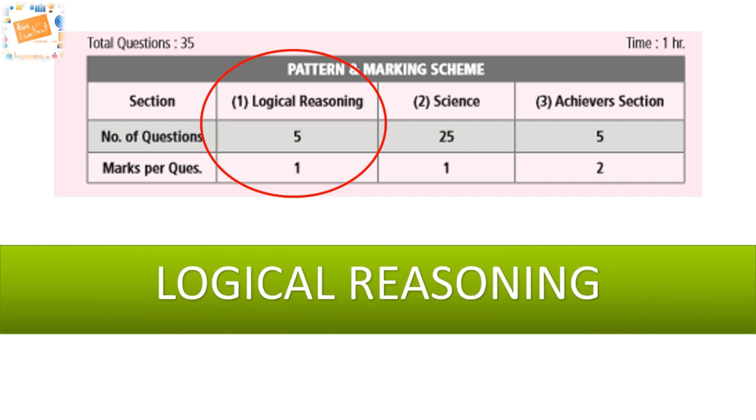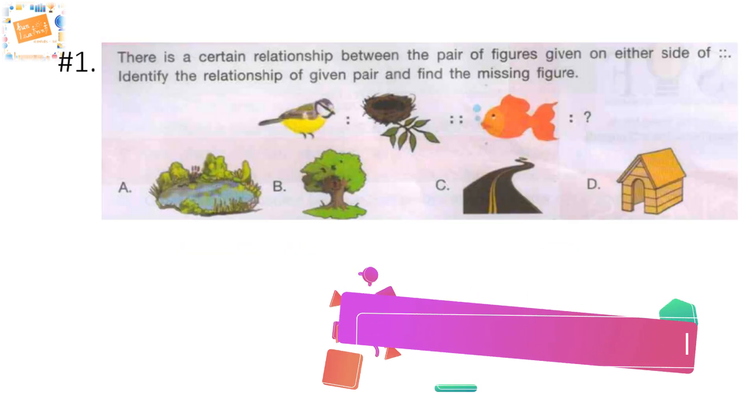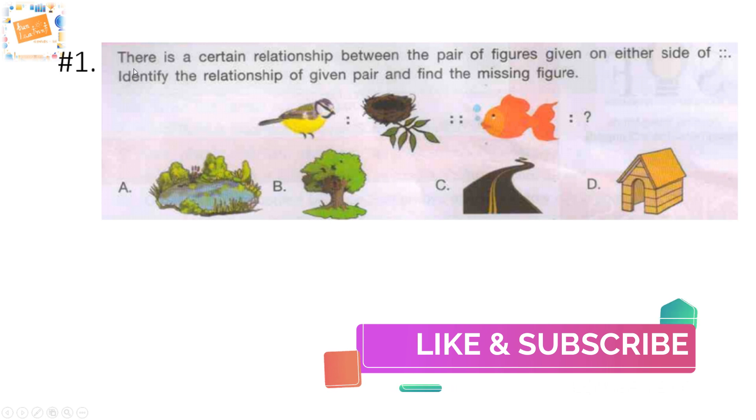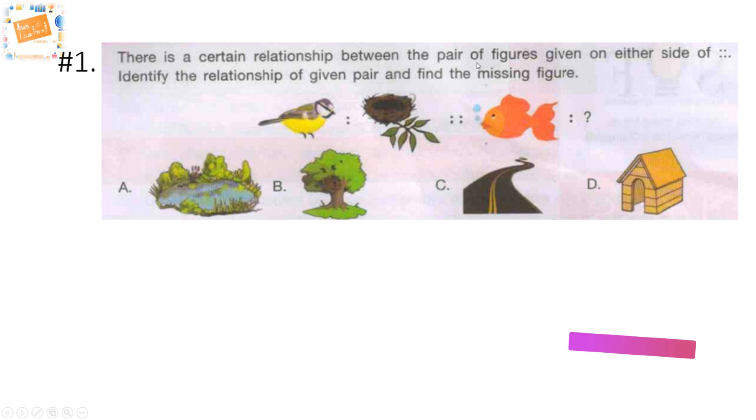Our first question reads: there is a certain relationship between the pair of figures given on either side of the four dots. Identify the relationship of the given pair and find the missing figure. Do you want to try out by guessing which would be the correct answer?